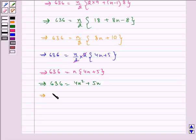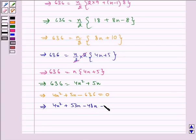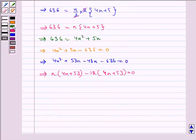Which implies 4N square plus 5N minus 636 is equal to 0. Now splitting the middle term and solving this further, we get 4N square plus 53N minus 48N minus 636 is equal to 0. Which implies taking N common, so we get N times 4N plus 53. Now taking minus 12 common from these two terms, we get 4N plus 53 is equal to 0. Which implies N minus 12 multiplied by 4N plus 53 is equal to 0.